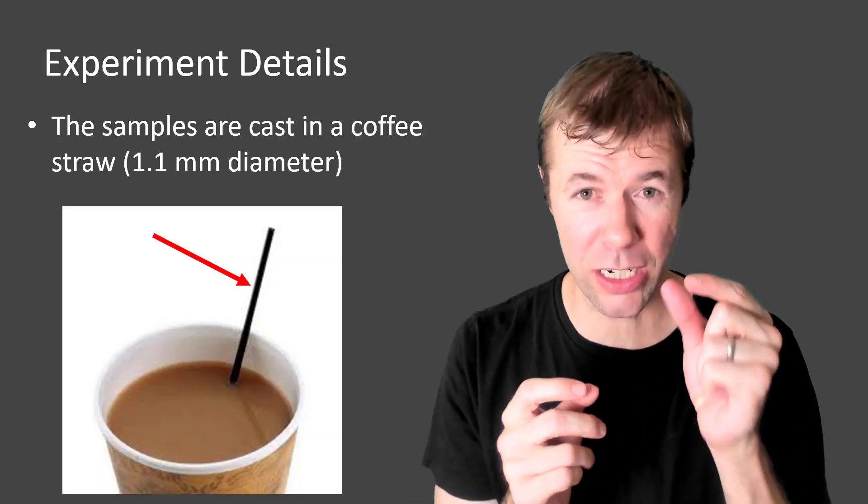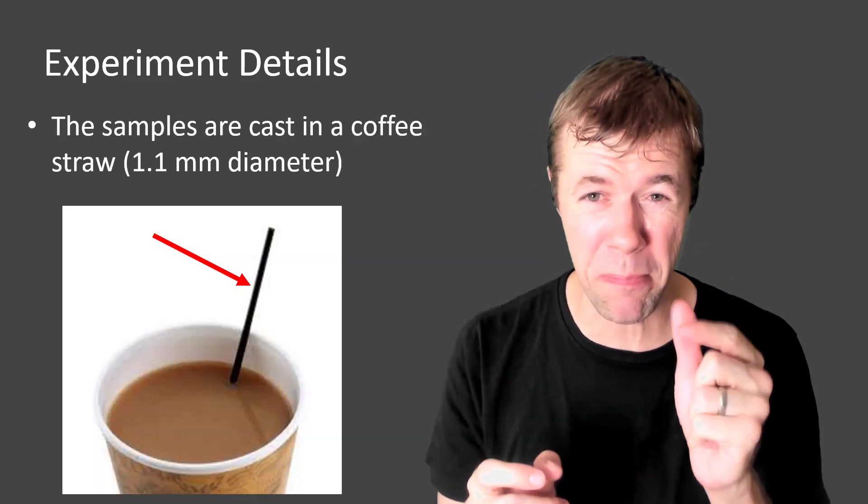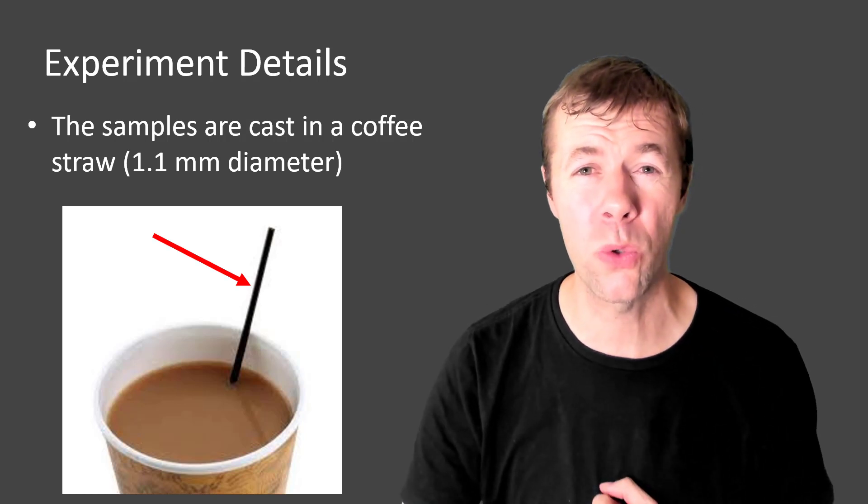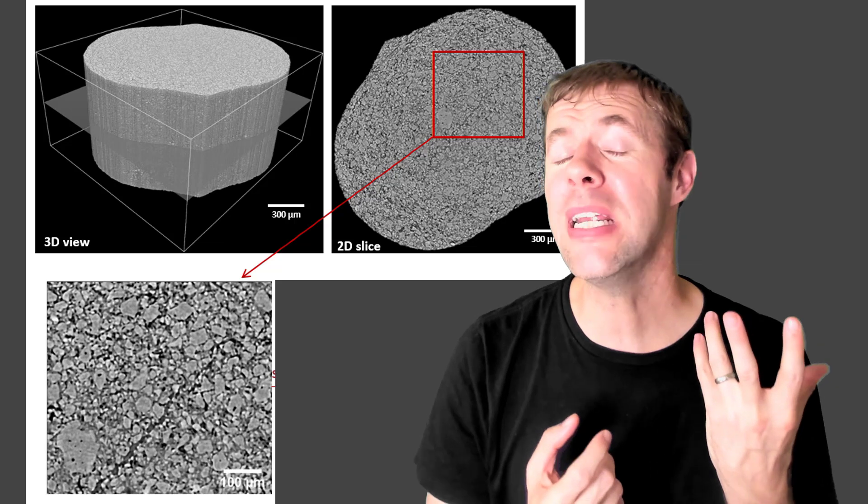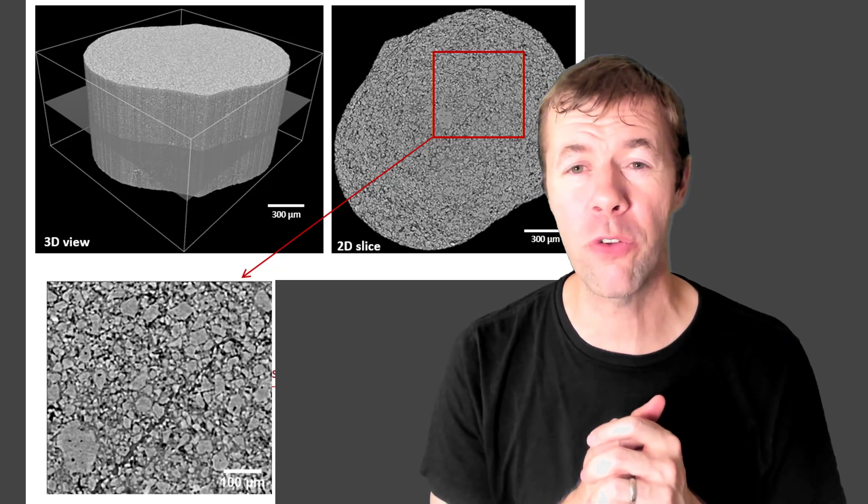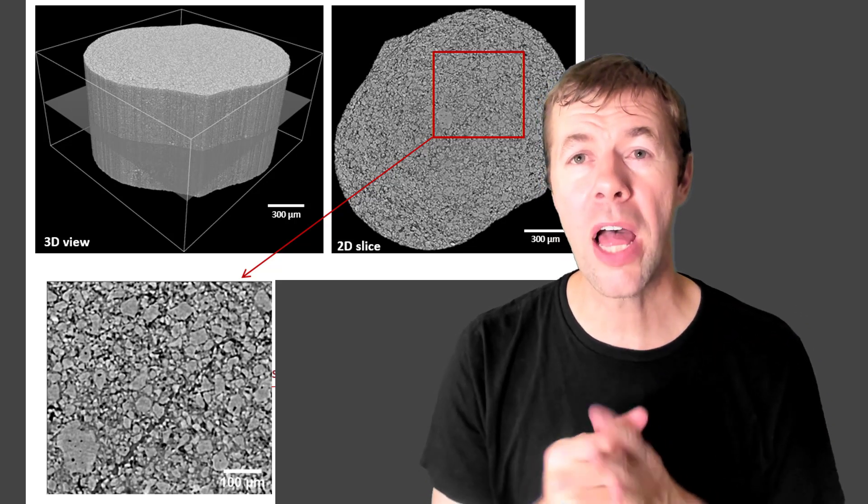When I label something called OPC, that means Portland cement. When I label something called MC3S, that's monocalcium tricalcium silicate. Yeah, say that three times fast. That is a synthetic cement that is used to model Portland cement. And no air entrainment was used for any of these experiments. Everything was cast in a coffee straw. Yeah, these one little bitty one millimeter diameter or so straws.